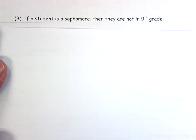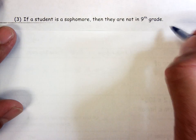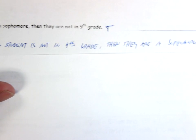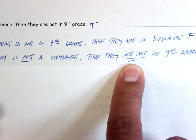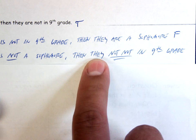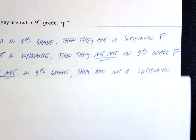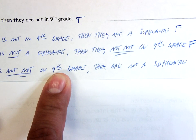Last example. Conditional: 'If a student is a sophomore, then they are not in ninth grade' — true. Converse: 'If a student is not in ninth grade, then they are a sophomore' — false, they could be in eleventh grade. Inverse: 'If a student is not a sophomore, then they are in ninth grade' — false, not always. Contrapositive: 'If a student is in ninth grade, then they are not a sophomore' — true.